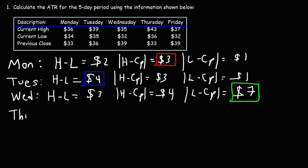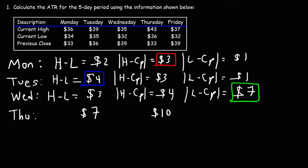Now let's move on to Thursday. The current high minus the current low is 43 minus 36, which is 7. The current high minus the previous close is 43 minus 33, which is 10. And the current low minus the previous close is 36 minus 33, which is 3. I know this process can be quite tedious, but it teaches you how to calculate the average true range. So for Thursday, the highest value is $10.